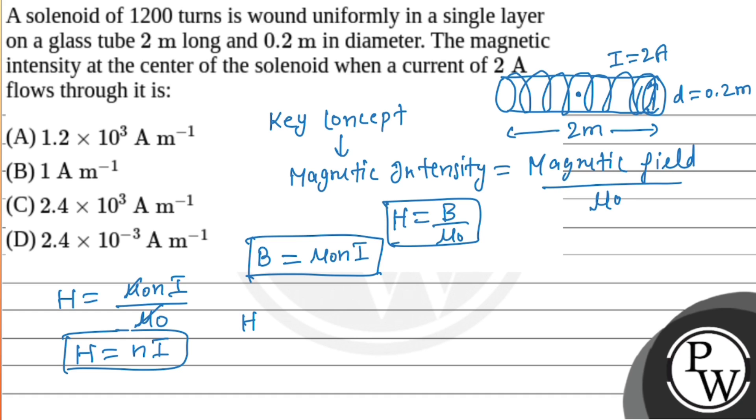H equals n I, where n is number of turns per unit length. Total turns is 1200 over total length 2 meters, so n equals 600 turns per meter. Multiplying by current I equals 2 amperes, the 2s cancel out.